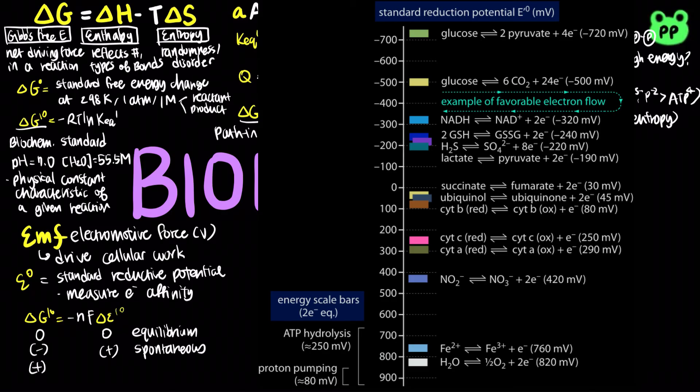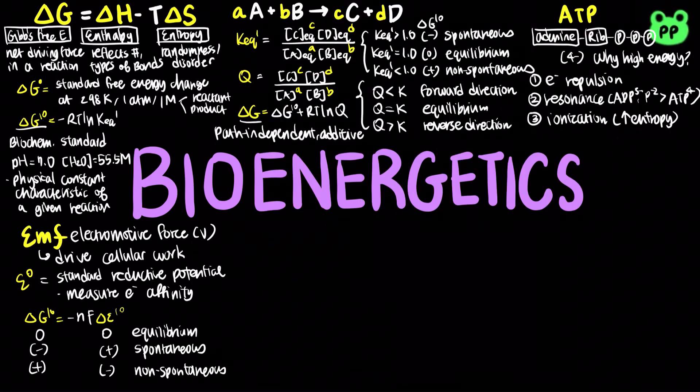And when the change in reductive potential is negative, which means that the product has less affinity for electrons than the reactants, the change in free energy is positive, and the reaction is non-spontaneous or endergonic. More details about oxidation-reduction reactions will be discussed in a future video.